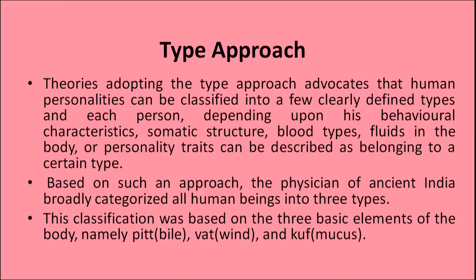Next is the type approach of personality. Theories adopting the type approach advocate that human personalities can be classified into a few clearly defined types, and each person, depending upon his behavioral characteristics, somatic structure, blood types, or fluids in the body, can be described as belonging to a certain type. Based on such an approach, the physicians of ancient India broadly categorized all human beings into three parts, based on three basic elements of the body: pitta, vata and kapha — that is bile, wind and mucus.